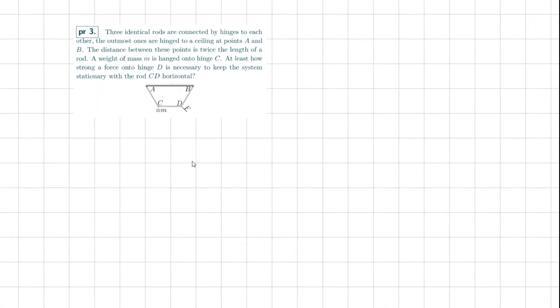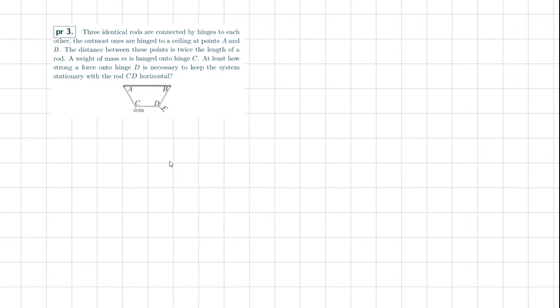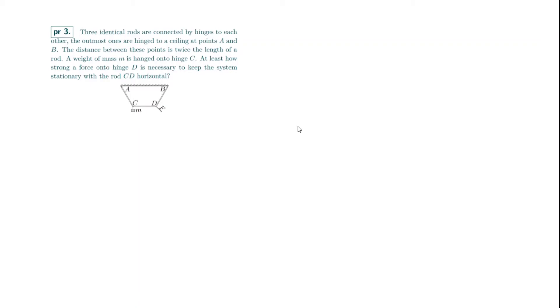Problem number three: three identical rods are connected by hinges to each other; the outermost ones are hinged to a ceiling at points A and B. The distance between these points is twice the length of a rod. A weight of mass m is hung onto hinge C. At least how strong a force onto hinge D is necessary to keep the system stationary with rod CD horizontal?